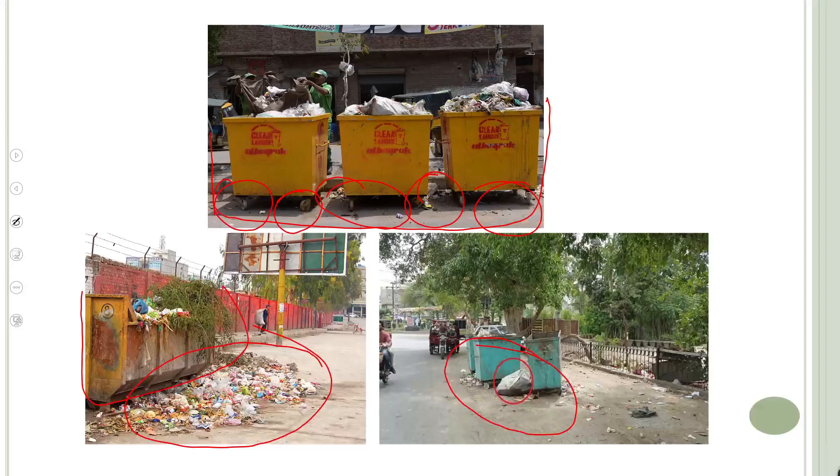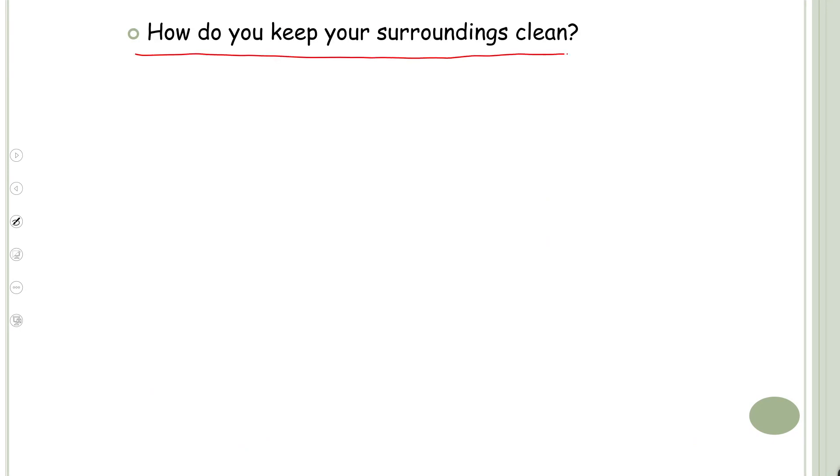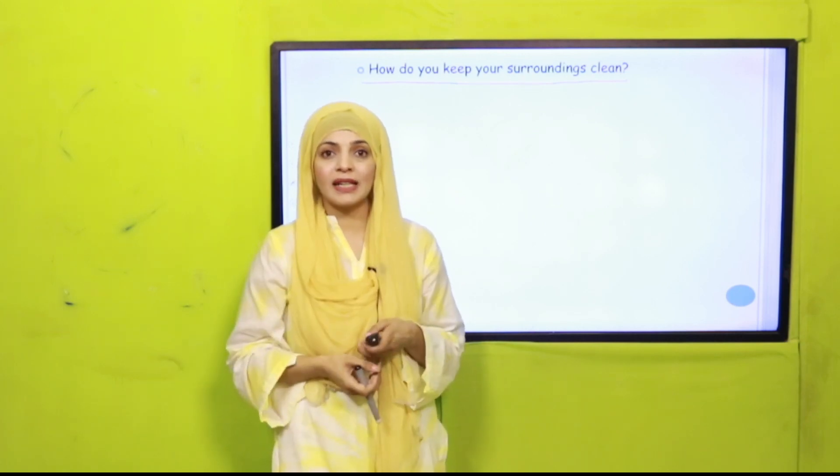Similarly, in your class there is a dustbin, and you still sharpen the pencil and throw the trash on the floor, put the chewing gum under the table, put the toffee wrapper on the floor — this is how everything gets dirty and polluted. Agar aap ko apni surroundings ko saaf rakhna hai, toh hum sab ko milkar kuda uthana hai aur dustbin mein daalna hai. Isi tarah se apne neighborhood ko, school ko, offices ko, aur markets ko bhi clean kar sakte hain.